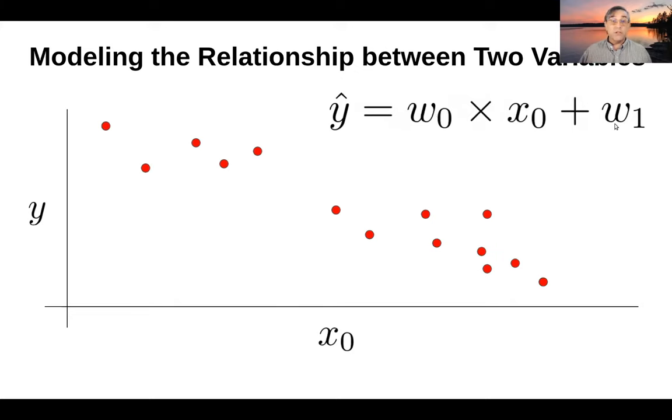So let me go ahead and draw in one such line. So I've picked a w0. It's a fairly shallow w0 and a w1. And that gives us one particular relationship. And the first question for you is whether or not this represents a good model for how x0 and y relate to one another.